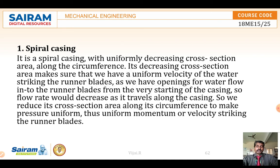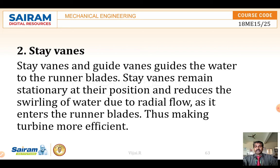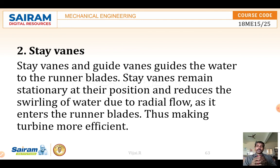The spiral cross-sectional area reduces, making the pressure uniform, so the velocity striking the runner is uniform and uniform momentum is maintained. Now the guide vanes — before reaching the runner, water coming through the spiral casing does not hit directly on the rotor. There are guide vanes present that act as nozzles, and water enters into the runner blades through these guide vanes.